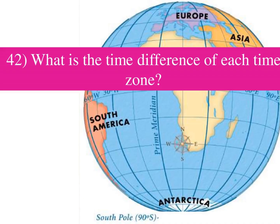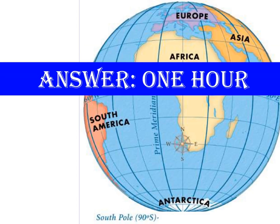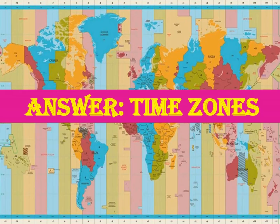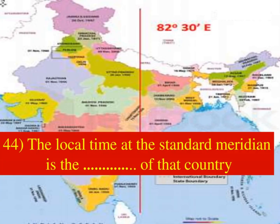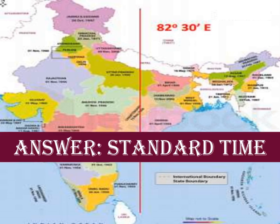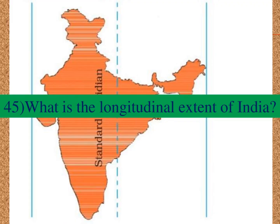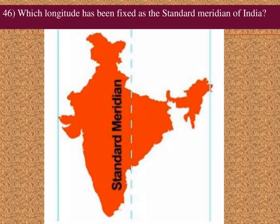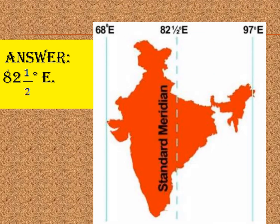What is the time difference of each time zone? Answer: 1 hour. The world is divided into 24 zones, each with a time difference of 1 hour — this is known as Time Zones. The local time at the Standard Meridian is the standard time of that country. What is the longitudinal extent of India? Answer: From 68 degrees East to 97 degrees East. Which longitude has been fixed as the Standard Meridian of India? Answer: 82 and a half degrees East.